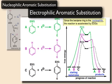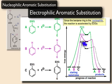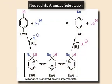It's important to remember that in those reactions, electron-donating groups on the ring facilitated those reactions by making the ring more electron-rich and thus more nucleophilic.